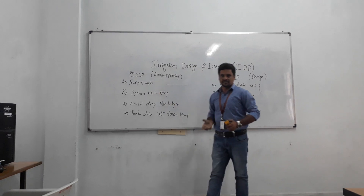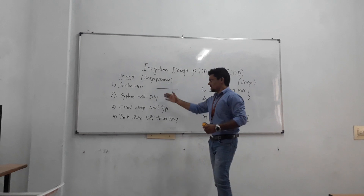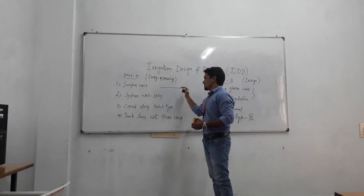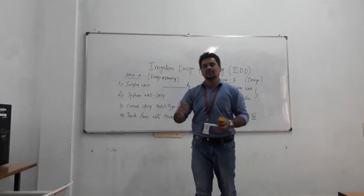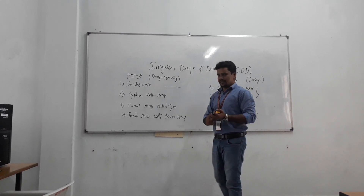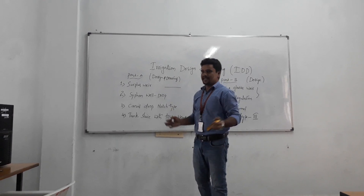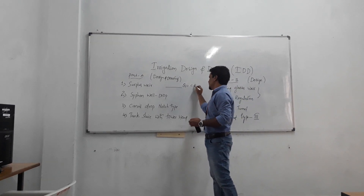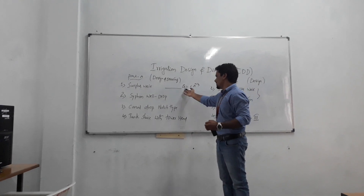What should be the length, the base, the crest — everything depends on the maximum flood, that is maximum discharge, maximum Q. That is found using Ryve's formula, Dicken's formula, or the English formula. These are runoff formulas that can be given directly. Suppose they provide some catchment area — based on that we can go for Q, which equals C times A to the power 2/3 or 3/4. Several formulas are available. Based on that, you will find Q.